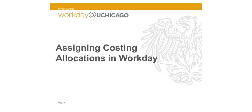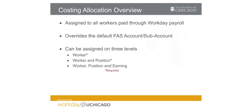Welcome to the Discover Workday at UChicago tutorial on assigning costing allocations in Workday. Costing allocations determine which FAS accounts and FAS subaccounts fund compensation within Workday and are required for all employees who receive compensation through Workday payroll. The business process of assigning costing allocations requires users with specific roles to override those existing default accounts.